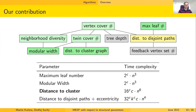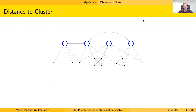The first two algorithms — maximum leaf number and modular width — are fairly simple. The second two are more interesting. In this talk, I will explain the distance to cluster algorithm, whose core ideas are very similar to those in the distance to disjoint paths plus minimum eccentricity algorithm.